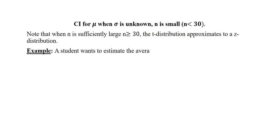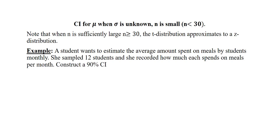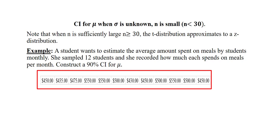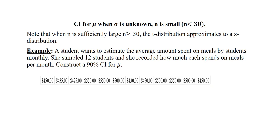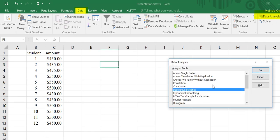A student wants to estimate the average amount spent on meals by students monthly. She sampled 12 students and recorded how much each spends on meals per month. We want to construct a 90% confidence interval for the population mean. We are going to start by going to Excel to get the summary statistics. Excel can also give us the margin of error. Once in Excel, go to Data, Data Analysis, click on Descriptive Statistics, and then OK.